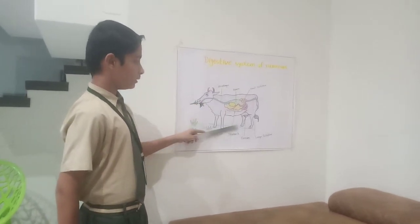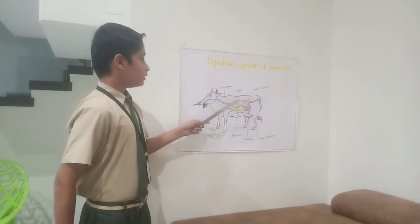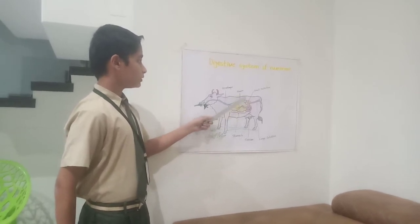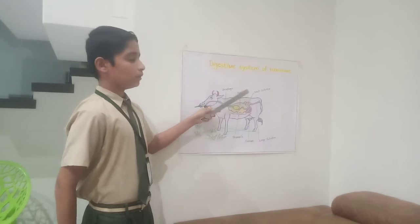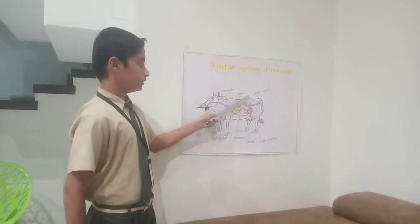Now caecum. It is connected to the junction of the small and large intestine. Now small intestine. Most of the digestion occurs here.